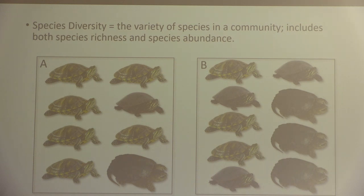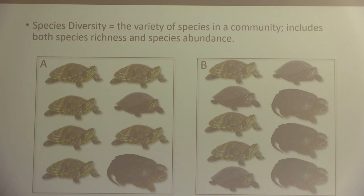Species diversity is the variety of species in a community, and it includes both richness and abundance — taking into account how many distinct species there are and how evenly those species are distributed. So the more diverse community would be the even one. The implication is that when we have a high percentage of aquatic invasive species that have established a population, that would decrease diversity.